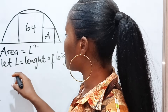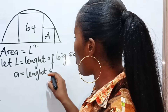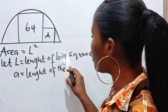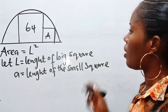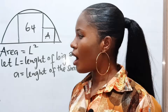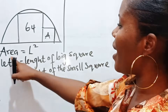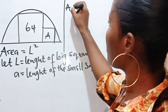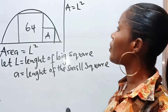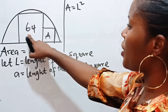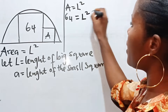And let A be equal to the length of the small square. Now, how do we find our L? Remember that area is equal to length squared — that is it for the big square. So our area is already given as 64, so 64 is equal to L squared.